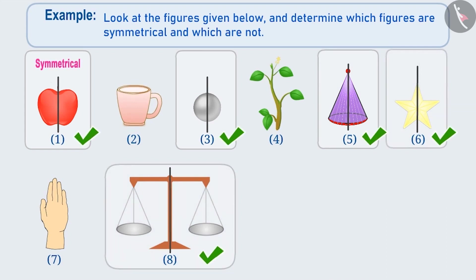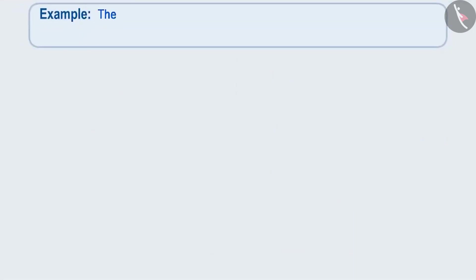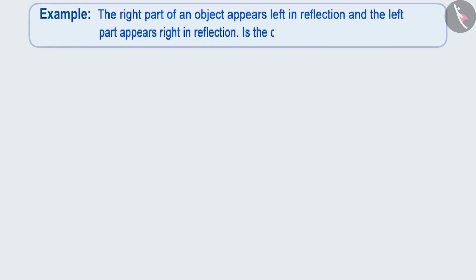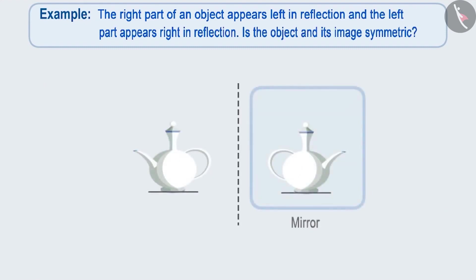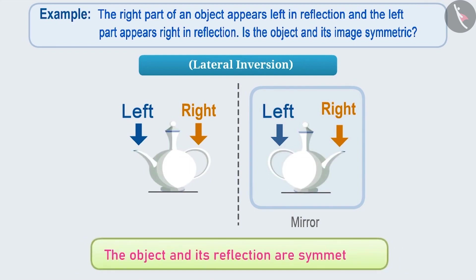The right part of an object appears in reflection to the left and the left part to the right in reflection. Is the object and its image symmetric? In the mirror, the right part of the object is visible to the left and the left part to the right — this phenomenon is what we call lateral inversion. The object and its reflection are closely related to each other; hence, they are also symmetrical to each other. Therefore, the object and its reflection are symmetrical.